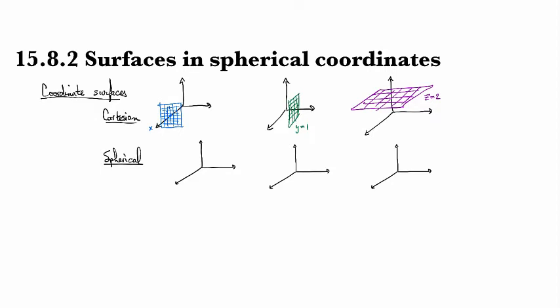For Cartesian, you fix x equal to a constant, you get a copy of the yz plane at that location. You fix y equal to a constant, you get a copy of the xz plane shifted out that far. And if you fix z equal to something, you get a copy of the xy plane moved up to that location.